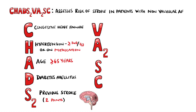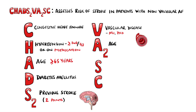S stands for previous stroke, which counts as 2 points, and V stands for vascular disease history, which could include myocardial infarction or peripheral artery disease as examples. The second A stands for age again, but this time 75 years or above, which again grants 2 points.